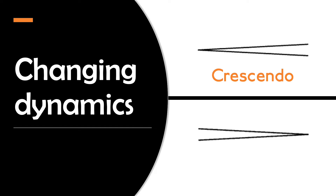As the diminuendo hairpin gets smaller, the music gets quieter, so diminuendo means getting softer. Here is a piece of music that demonstrates a diminuendo going from loud to soft.